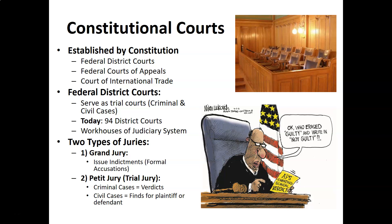Let's talk about the federal district courts because they're the big set of courts across the country that do most of the work and handle most of the cases that our federal court system looks at. The district courts serve as trial courts — they try both criminal and civil cases and they're courts with original jurisdiction. So they're actually trying cases that have not been heard before; they're not on appeal. We actually have 94 district courts currently in our country.